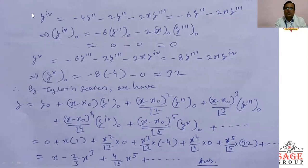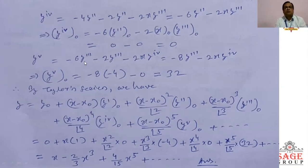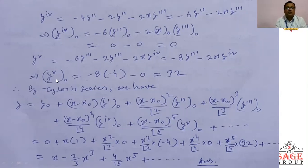Now differentiating the 4th derivative of y: the 5th derivative of y = −6y''' − 2y''' − 2x·(4th derivative of y) = −8y''' − 2x·(4th derivative of y). At x = x-naught = 0: 5th derivative of y at x-naught = −8·y'''(naught) = −8·(−4) = 32. So the 5th derivative of y at x-naught = 32.